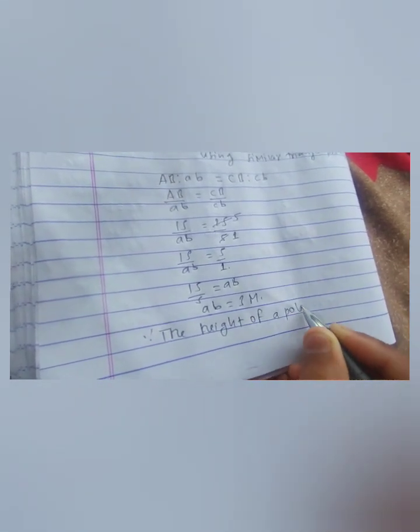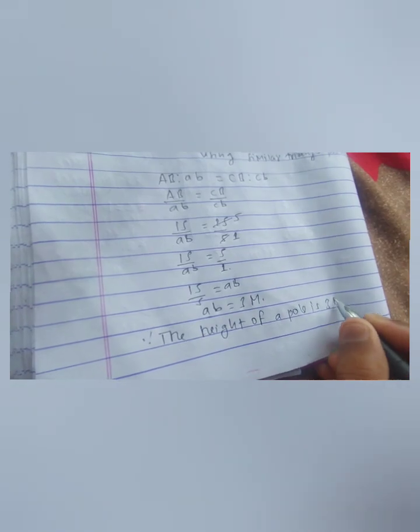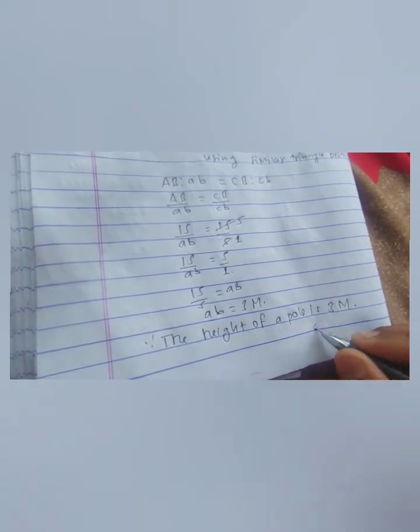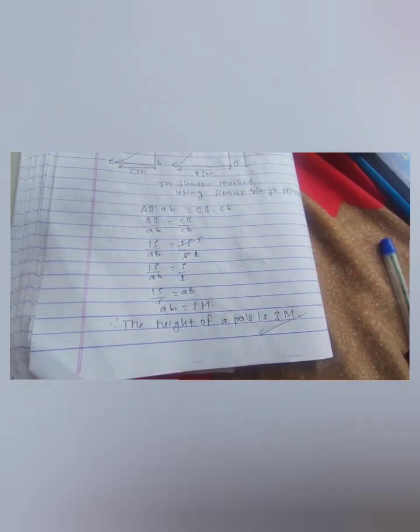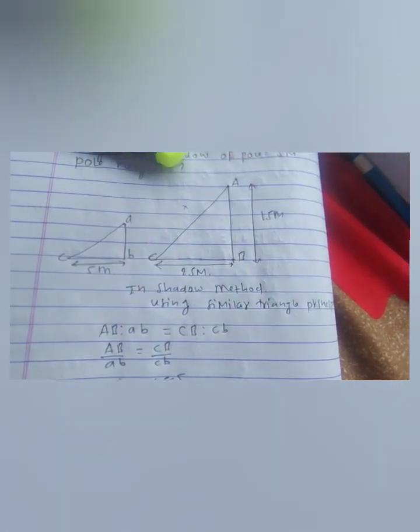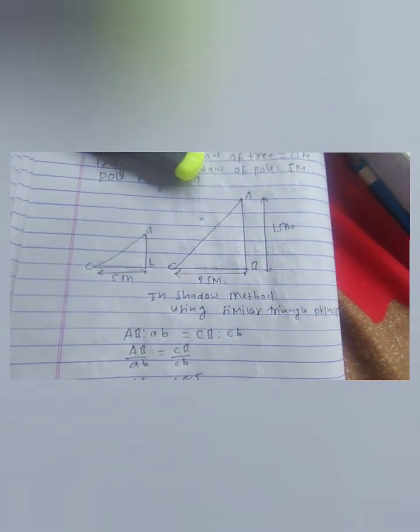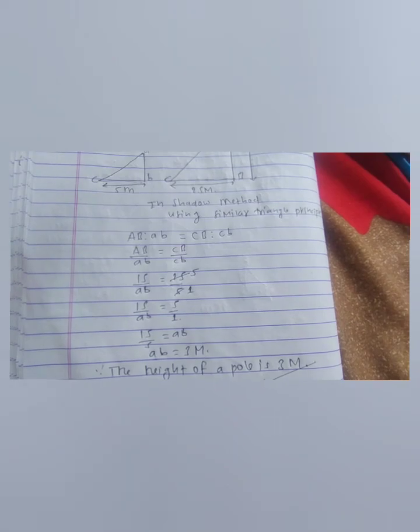Sometimes pole height is given and you are asked to calculate the height of the tree. In this way you can use the same method and calculate it using the similar triangle principle. I hope you understand. Thank you.